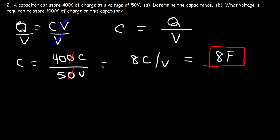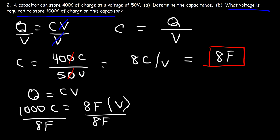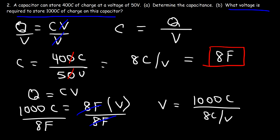Now let's move on to part B. What voltage is required to store 1000 coulombs of charge on this capacitor? Going back to Q equals CV, the electric charge is 1000 coulombs and the capacitance is 8 farads. We divide both sides by 8. Since 8 farads equals 8 coulombs per volt, the coulombs cancel, giving us units of volts. So V equals 1000 divided by 8, which is 125 volts.